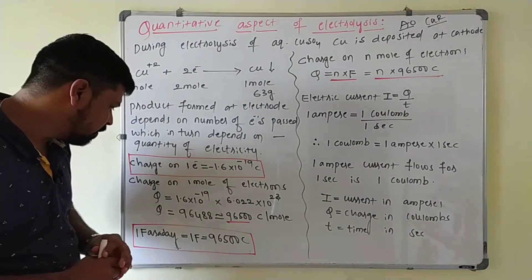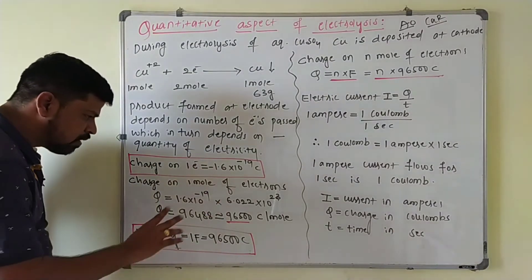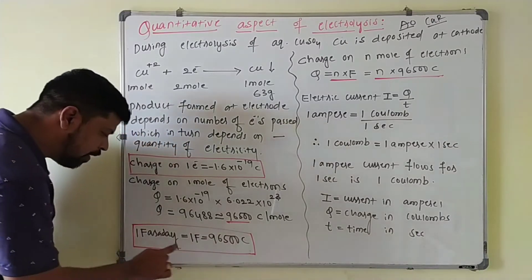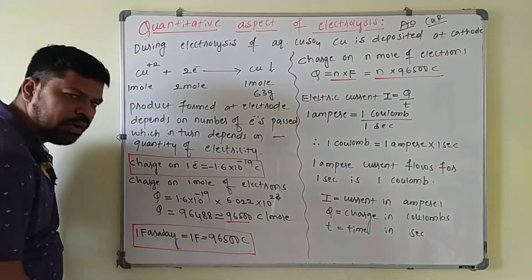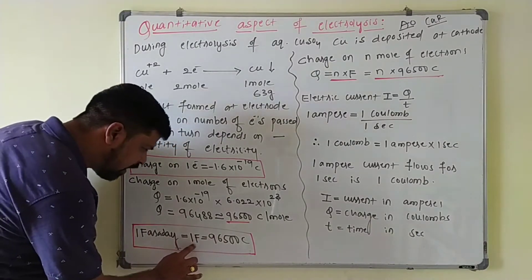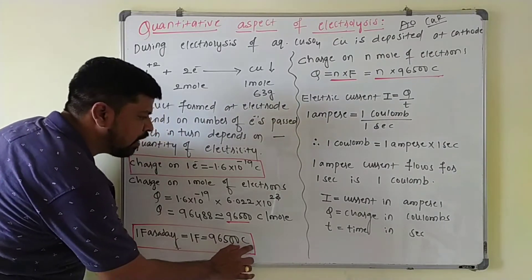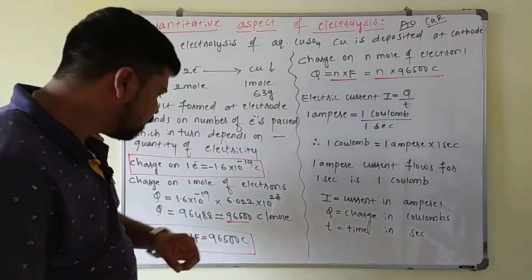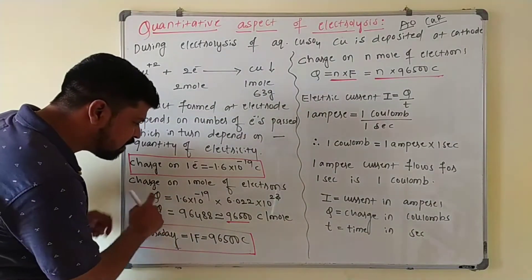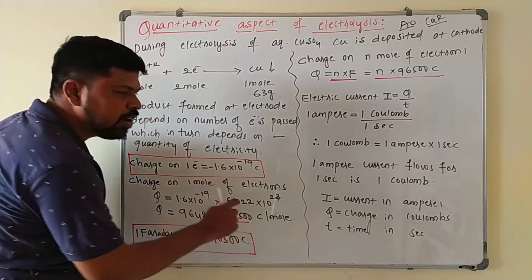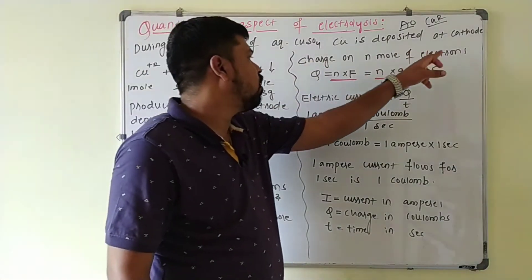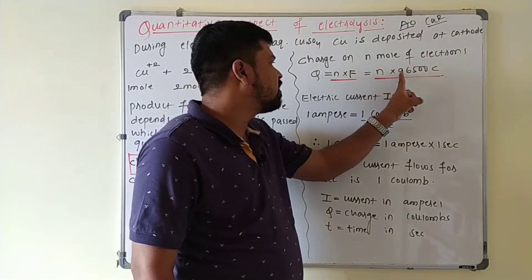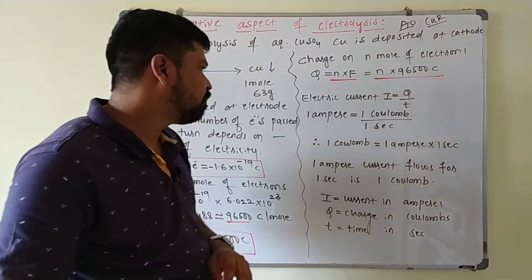This value — the charge on one mole of electrons, 96,500 coulombs — is taken as one Faraday. Always remember: one Faraday = 96,500 coulombs. The charge on n moles of electrons is Q = n × F, where F is one Faraday = 96,500 coulombs, so Q = n × 96,500 coulombs.